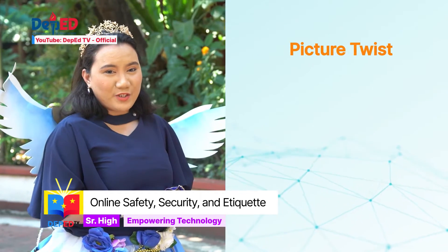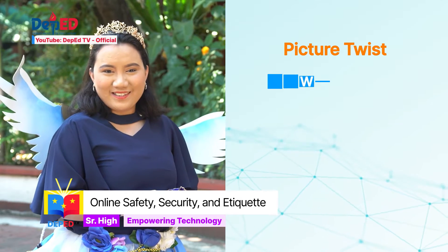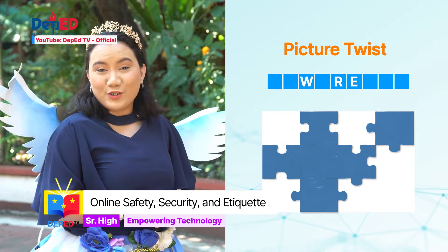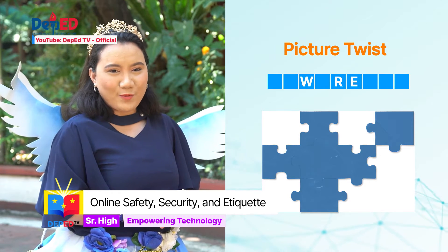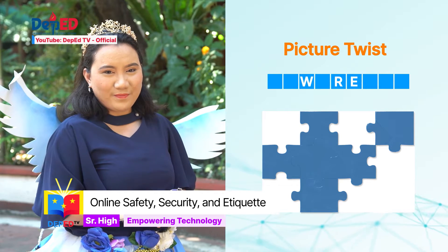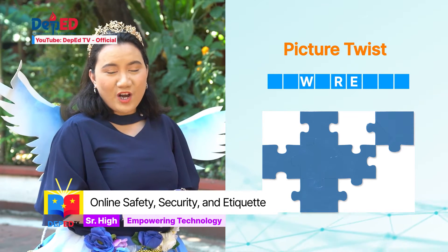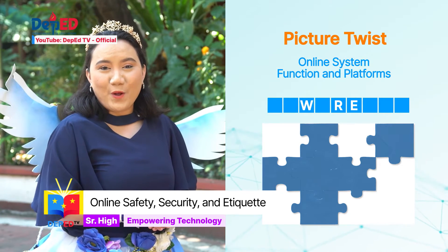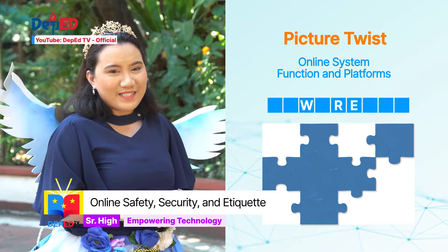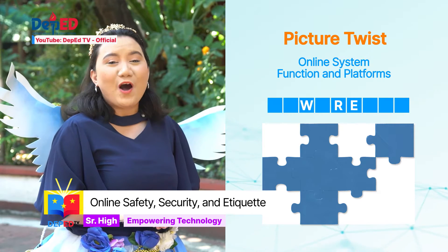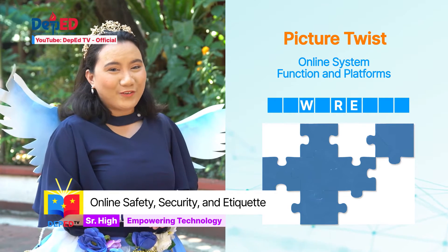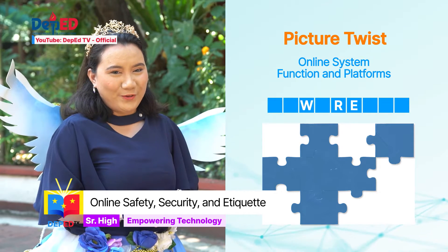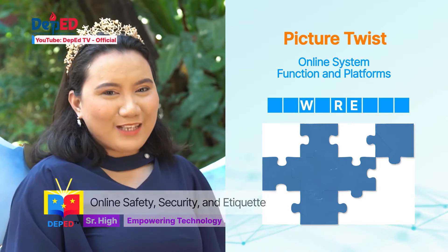This game is called Picture Twist. The mechanics of the game is to complete the picture and use it as a hint to guess the words. The theme is online systems, functions, and platforms — so it must be talking about the different uses of ICT. Alright, student, this is going to be easy for you. Let's solve that puzzle!